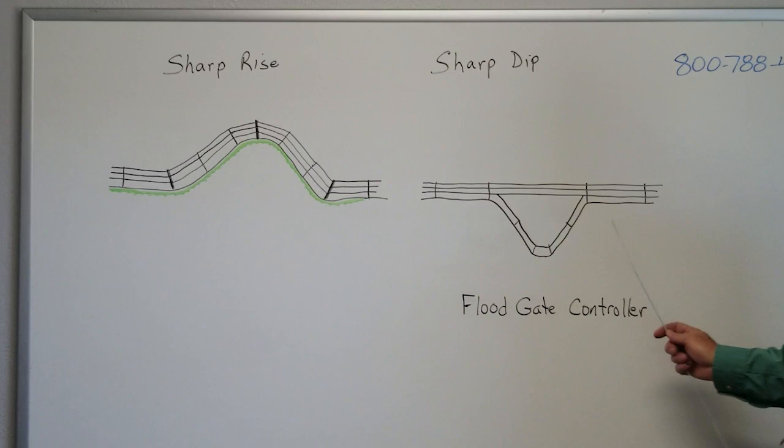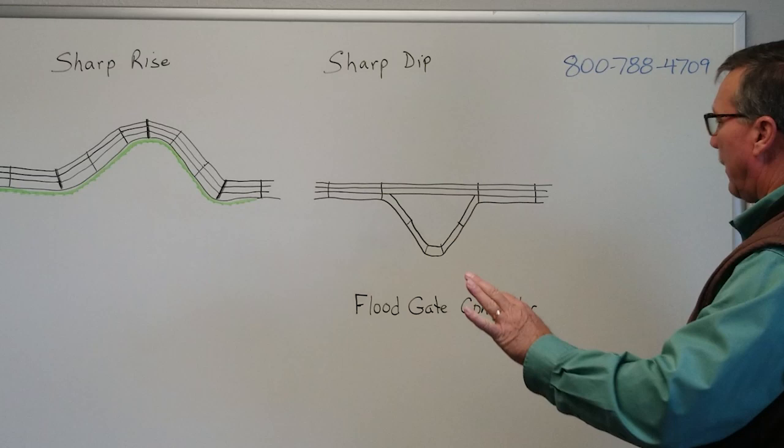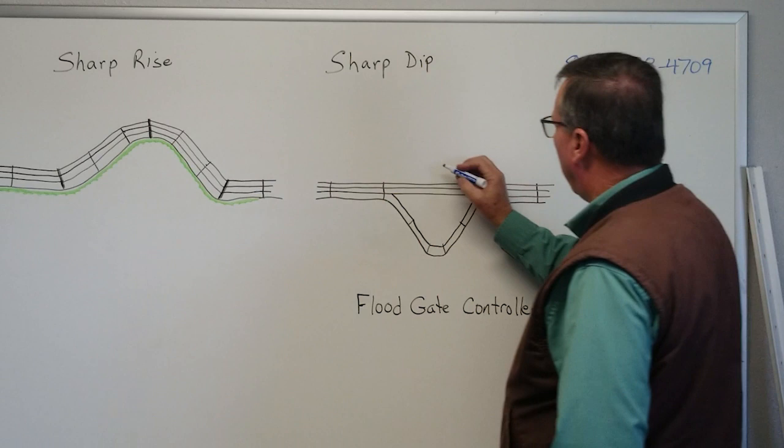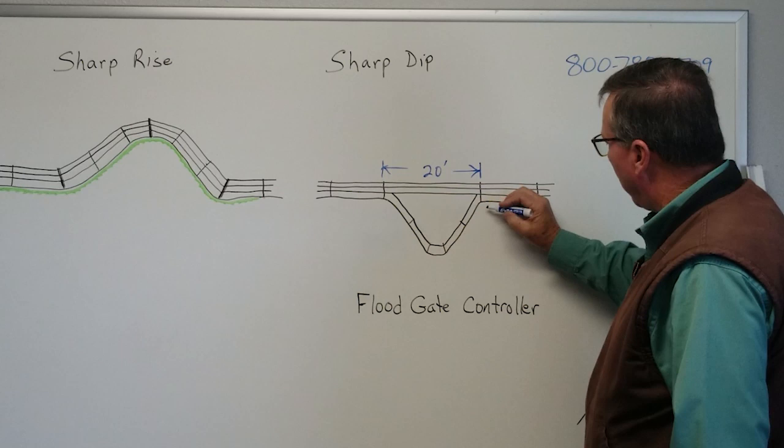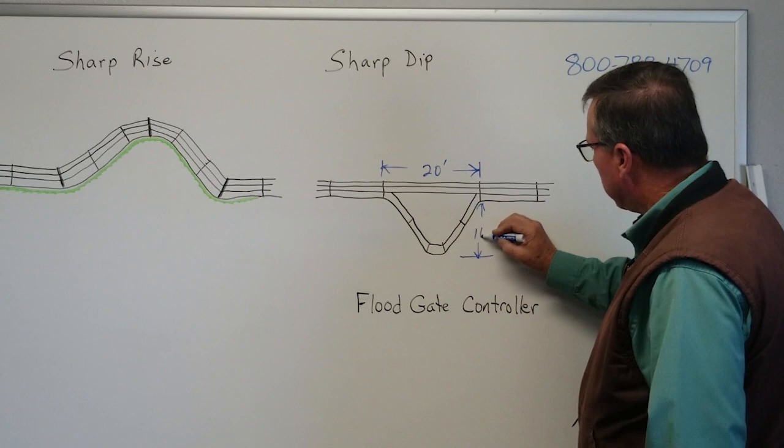On a sharp dip right here, let's say we have a ditch in a field that's going out to a creek or a river, and let's say from top of the slope to top of the slope is 20 feet. And then the depth from the top of the ground here, down to the bottom of the ditch, let's say it's a 10 foot deep ditch. And that's pretty common.